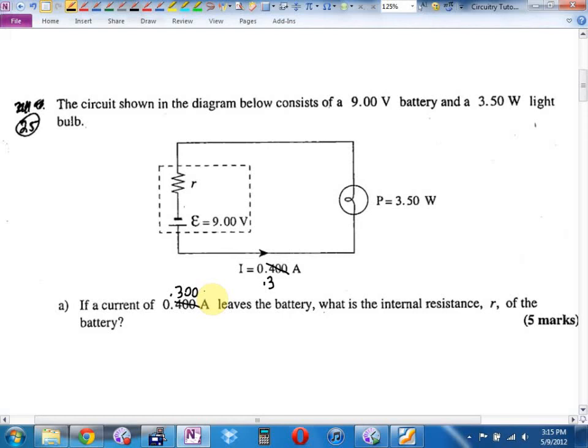Again, you can write these down or I'll print this up for you after. These are questions you haven't seen. I'm going to suggest that you just watch because trying to write out these circuits takes a long time. The circuit shown in the diagram below consists of a 9-volt battery. That's the EMF. The actual terminal voltage will be this minus whatever I lose going through there. And a 3.5-watt bulb. Is this the same question that we just did? It is identical, isn't it?